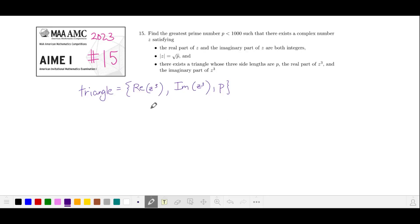Our triangle will consist of the real part of z cubed, the imaginary part of z cubed, and p. This means that these three quantities are positive. If the real and imaginary parts of z cubed are both positive, that puts z cubed in the first quadrant.